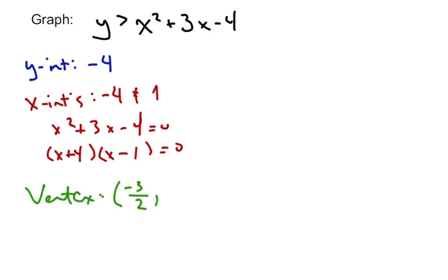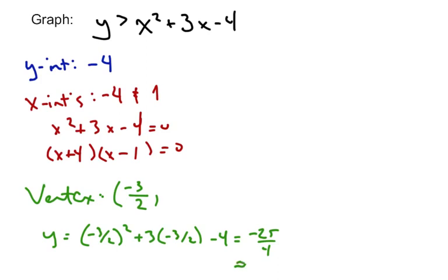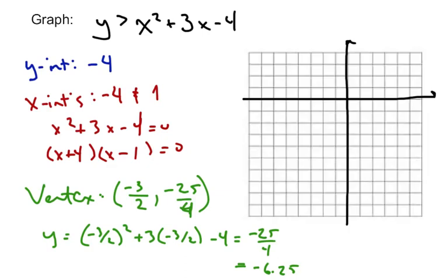Taking negative 3 halves and plugging it in, the y-coordinate is going to be negative 3 halves squared plus 3 times negative 3 halves minus 4, which equals negative 25 over 4, or negative 6.25. Now we've got pretty much everything we need to graph. We plot the y-intercept at negative 4, the x-intercepts at negative 4 and 1, and the vertex at negative 1.5, negative 6.25.